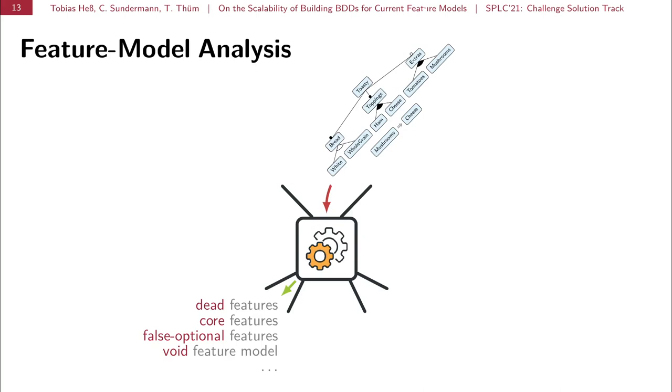Other answers we get are cardinality based. For example, the feature cardinality, in how many products does a certain feature appear. The configuration cardinality, if we selected or deselected some features, how many products are still able to configure based on this partial configuration. And the feature model cardinality, how many products are encoded by the feature model.